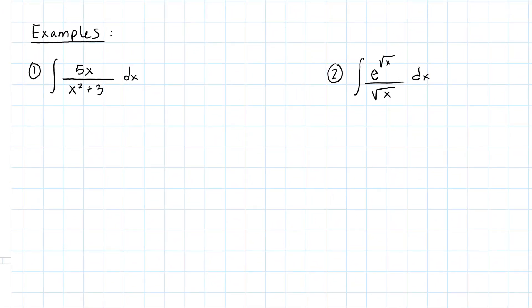Now let's look at a couple of examples. Here's my first one. I'm thinking: is this one of my basic integrals? It is not — it does not fall into our category of basic integral formulas. So I think about what could be my u. Looking at it, I'm thinking: what if this denominator were rewritten as 5x times (x²+3) to the negative first power, using rules of exponents?